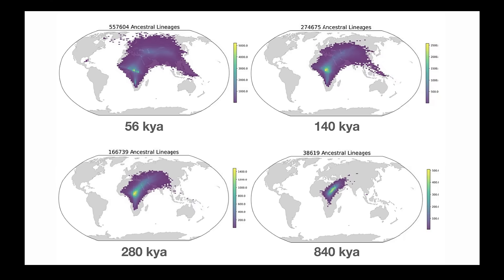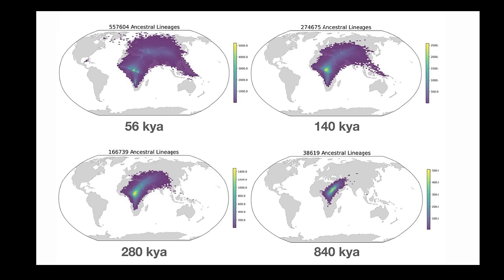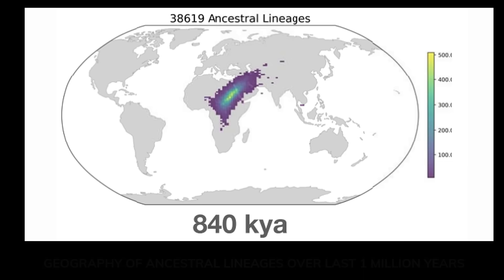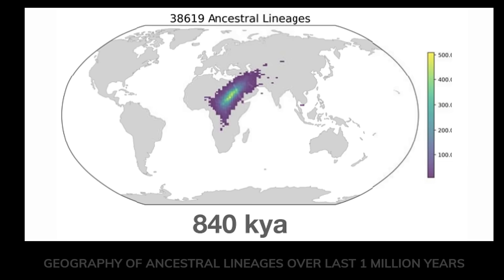The scientists also included three Neanderthal genomes in the tree, as well as one Denisovan genome, which previous researchers discovered to have slightly more primitive genes than modern humans. Because regions of the human genome are only inherited from one of our parents, the ancestry of each genetic region can be traced back in time, much like a family tree, to the ancestor who first exhibited the specific genetic variation.